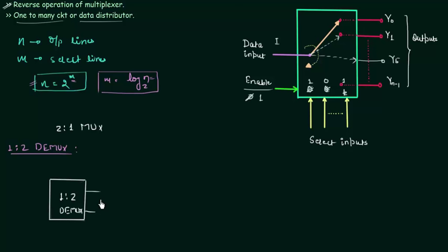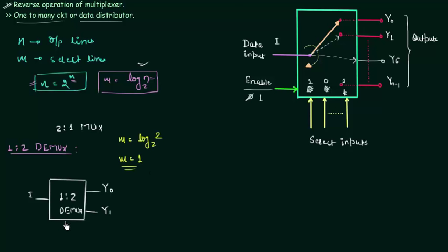We will try to find out the outputs and the number of select inputs. Using the formula m = log base 2 of n, and n is 2 in this case, so m is simply 1. We will have a single select input S0. I will also consider enable e. Now we can easily find out the truth table for 1-to-2 demux.